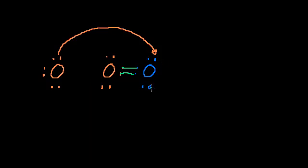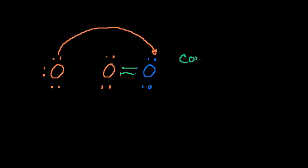They're sharing two pairs of electrons — we can draw a line here to represent that. This guy had six electrons but can pretend he has eight in his valence shell by counting the shared ones. And this is called a covalent bond. This is typical when you're dealing with two elements that aren't very different in terms of their electronegativity — their desire to attract electrons.